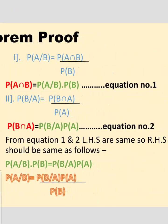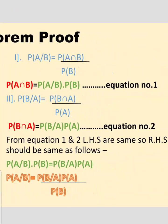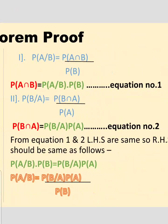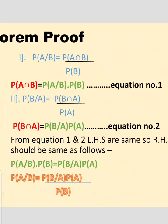Observing equations one and two, the left-hand sides of both equations are the same — P(A ∩ B) equals P(B ∩ A). Since the left-hand sides are equal, the right-hand sides must also be equal. Equating them: P(A|B) × P(B) = P(B|A) × P(A). Solving for P(A|B), we get P(A|B) = P(B|A) × P(A) divided by P(B).